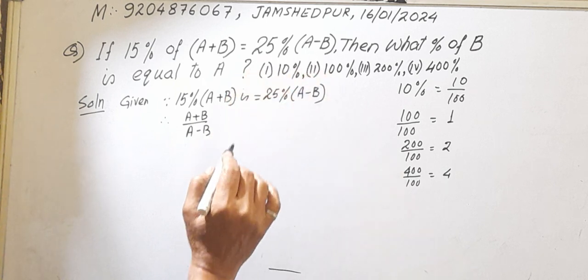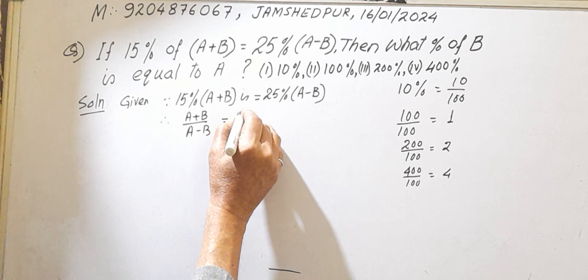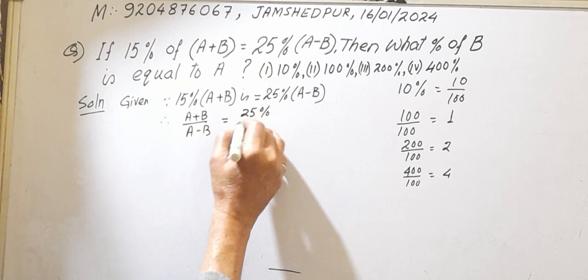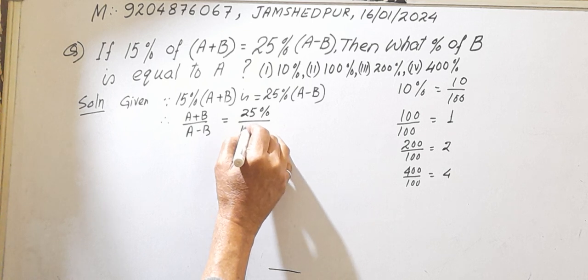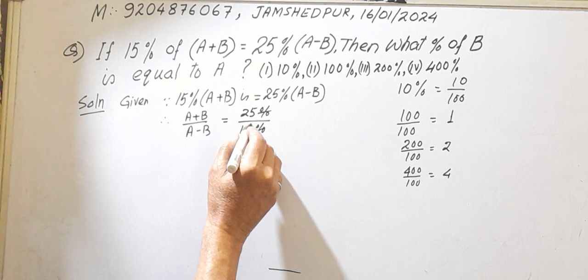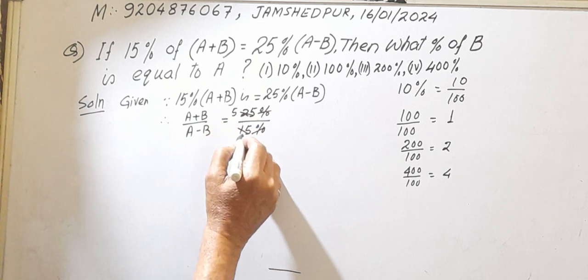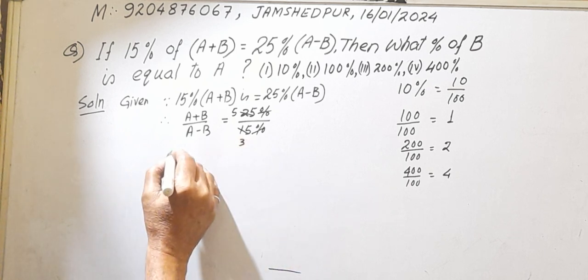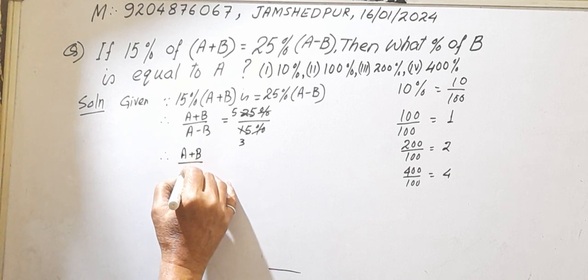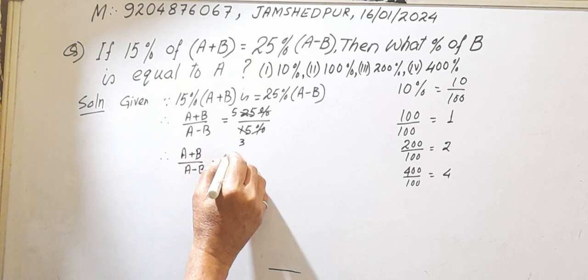You don't need to divide anything. 25% is given here and 15% is given there, so the percents cancel. When you simplify, 15 and 25 reduce to 3 and 5. Therefore, A plus B by A minus B equal to 5 by 3.